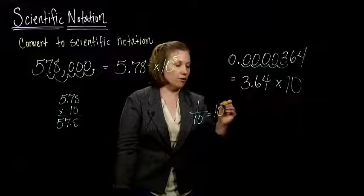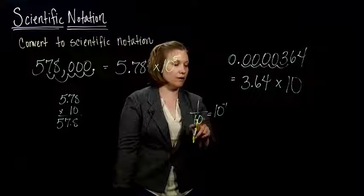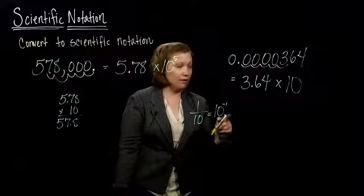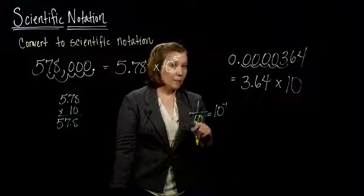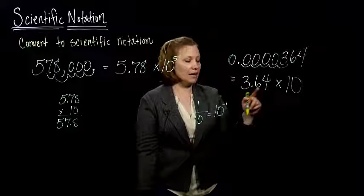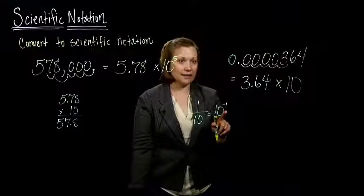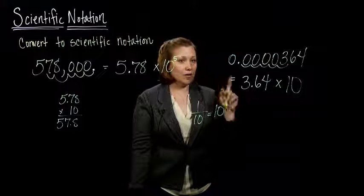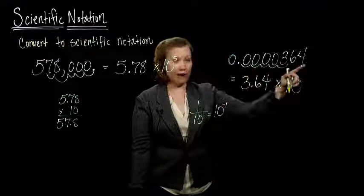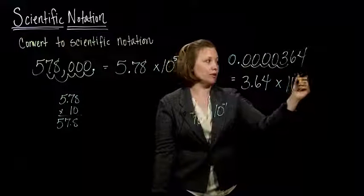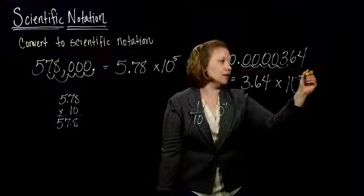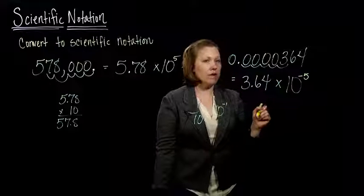So with our new idea of negative exponents, we can rewrite this as 10 to the negative 1. So dividing by a power of 10 is like the same thing as multiplying by 10 to the negative 1. And we don't want to do that once. We want to do that 5 times here to move the decimal place to the right 5 times. So this becomes 10 to the negative 5.